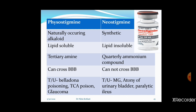In conditions where there is no need to cross a biological membrane, neostigmine is used — such as in myasthenia gravis, atony of the urinary bladder, and paralytic ileus. In belladonna and TCA poisoning, clinical features involve the brain, so a drug that can cross the blood-brain barrier is needed — physostigmine is used, not neostigmine. This comparison between physostigmine and neostigmine is very important and frequently asked in exams. Neostigmine is available as an ampoule or vial for intravenous injection.